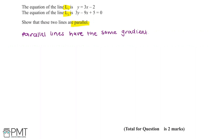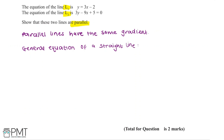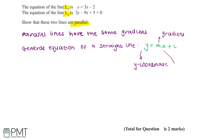We can use the general equation of a straight line to help us work this out. We know that the general equation of a straight line is y equals mx plus c. Here, y refers to the y-coordinate, m refers to the gradient of the line, x refers to the x-coordinate, and c refers to the y-intercept of the line, which is the place where the line crosses the y-axis.